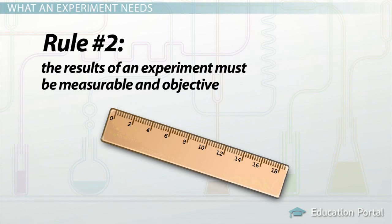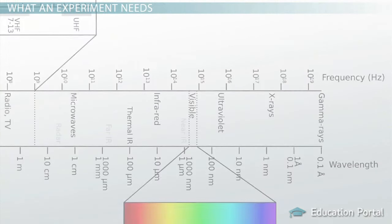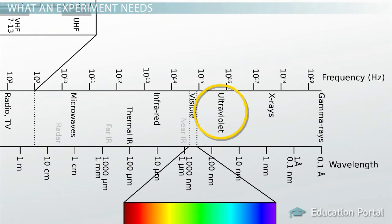Sometimes we need special equipment to observe things in a measurable way. For example, we can't see ultraviolet light or hear infrasonic sounds. We need special devices to detect and measure those properties for us.